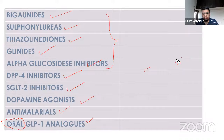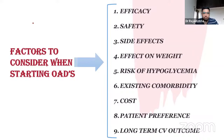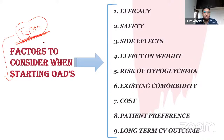When choosing an OAD, several factors must be considered. First is the efficacy of the drug. Then safety, and the side effect profile — whether that profile is suitable for your particular patient. Also, the drug's effect on weight matters: options may differ for a thin versus an obese or overweight diabetic patient.